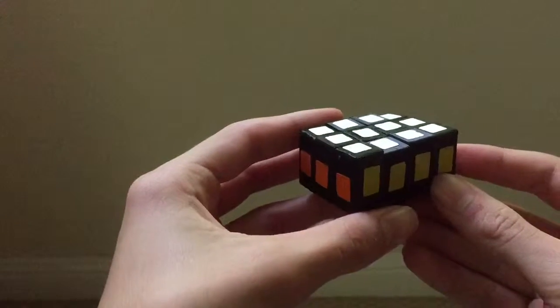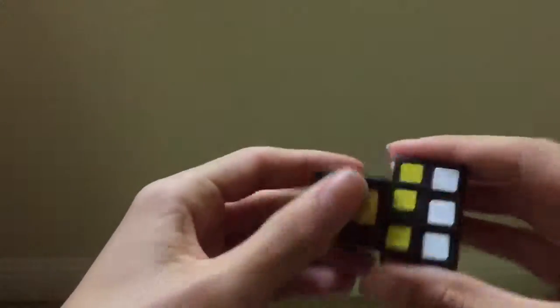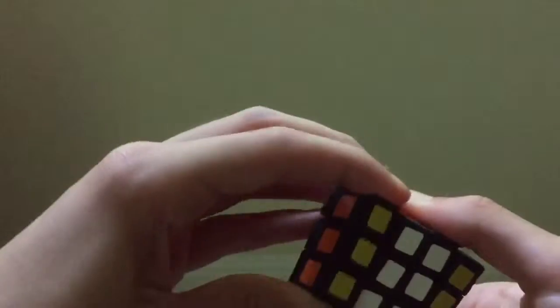This is my 1x3x4 Rubik's Cube type twisty puzzle. It was designed in SolidWorks and 3D printed on a PrinterBot Simple Metal 3D printer.